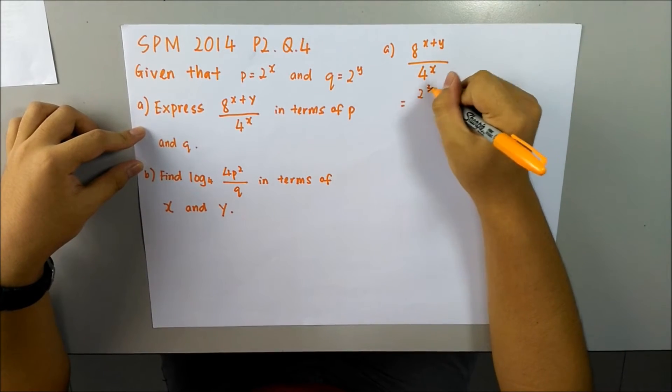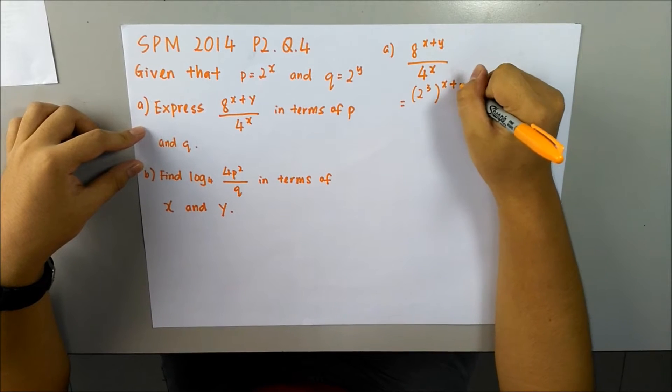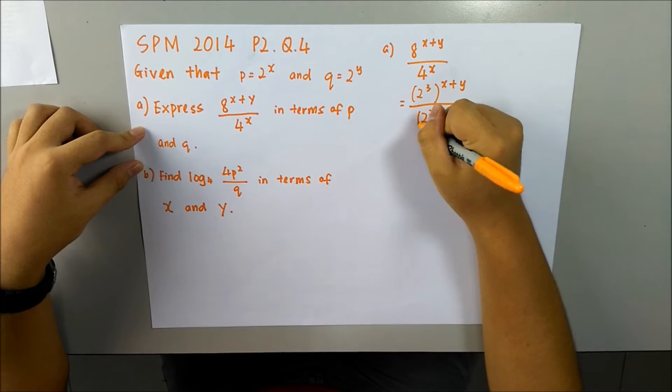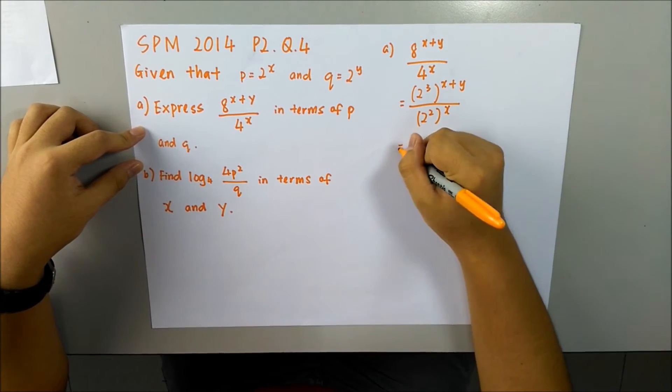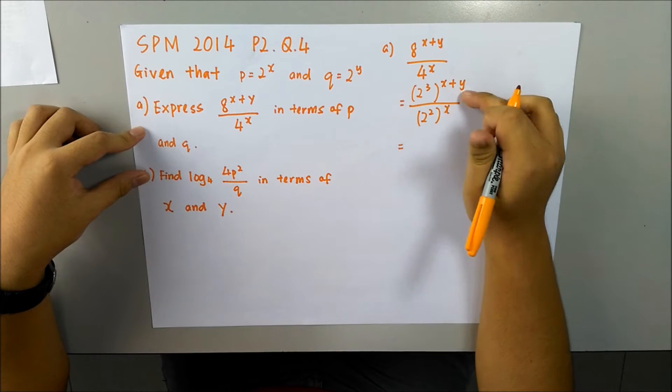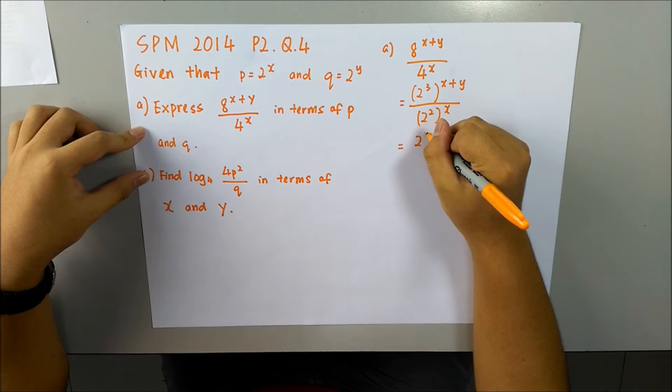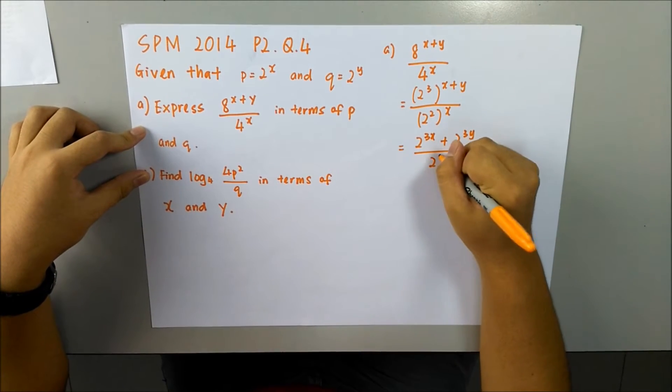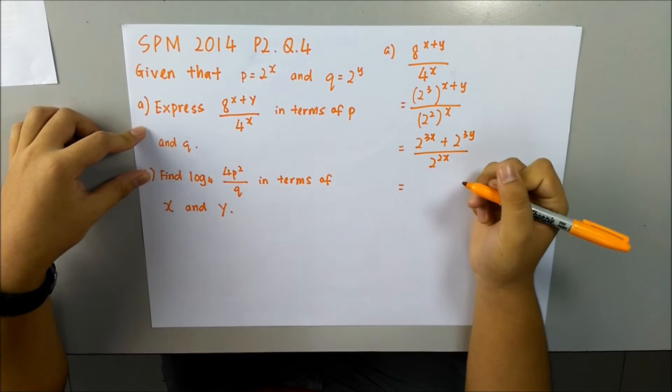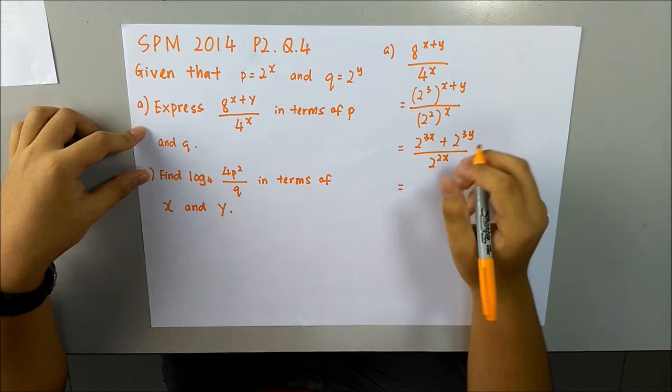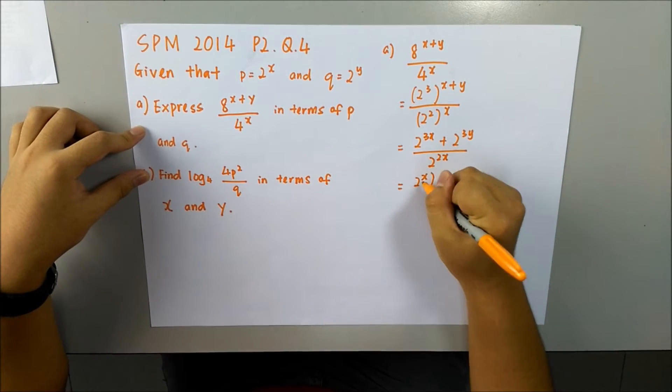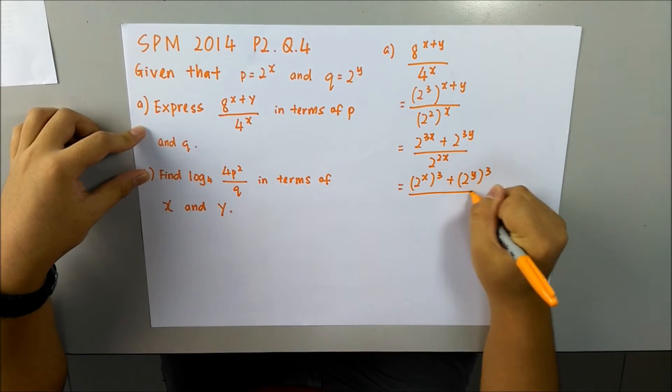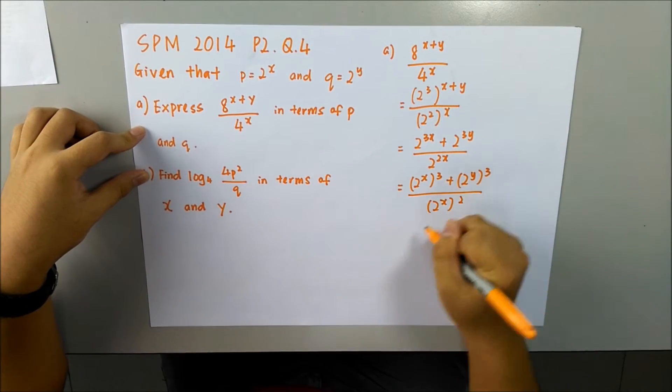So 2 cubed is 8, so we write again x plus y. 2 squared is 4, so we write it again. We are going to expand this. Since we are going to expand this, so 2 to the 3x plus 2 to the 3y over 2 to the 2x. We can change it to 2 to the x cubed plus 2 to the y cubed over 2 to the x squared.